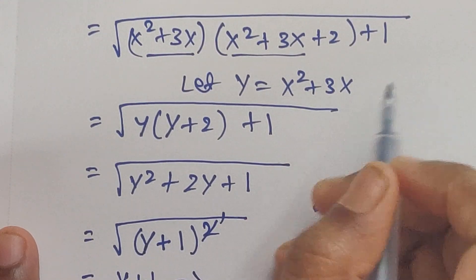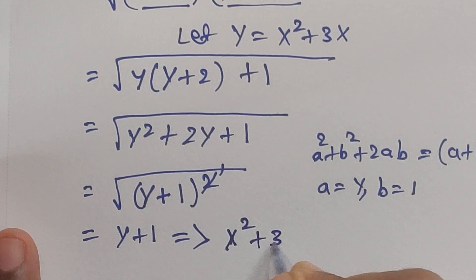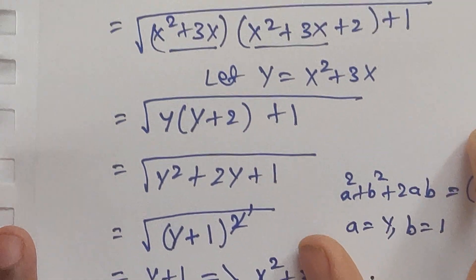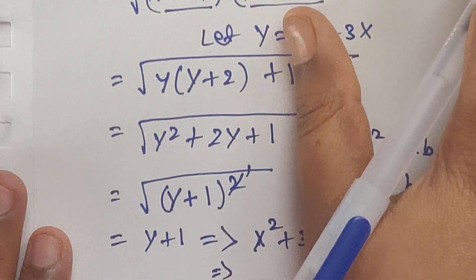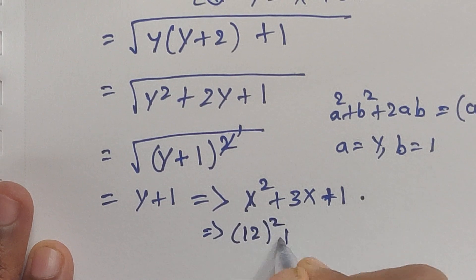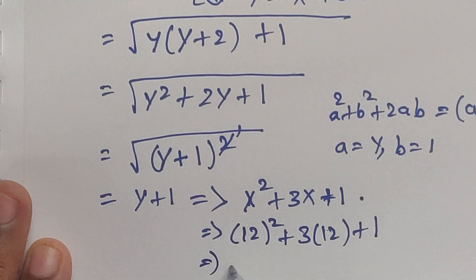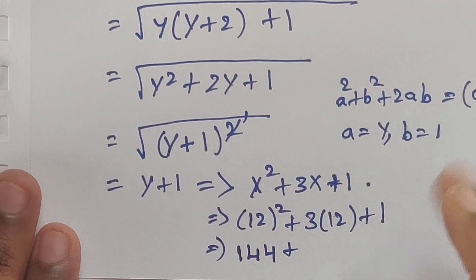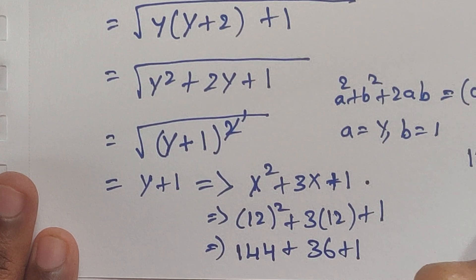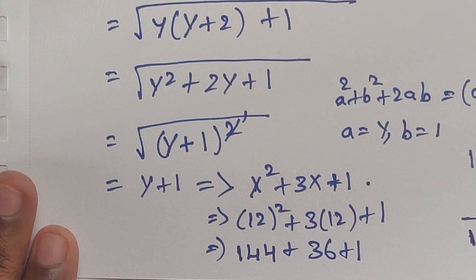We know y equals x² plus 3x, so substituting gives x² plus 3x plus 1. Now substituting x equals 12: 12² plus 3 times 12 plus 1 equals 144 plus 36 plus 1, which equals 181. So 181 is the answer.